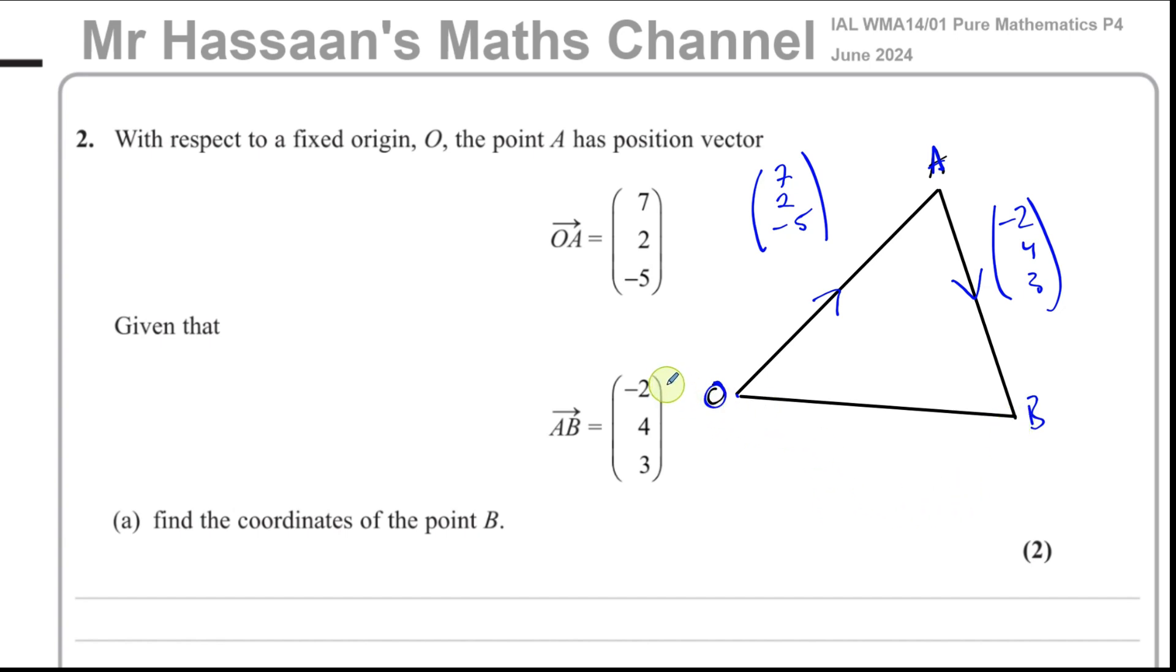The coordinates of the point B are basically the same numbers that you'll find in the vector OB. The vector OB tells you how to get from O to B, and the coordinates of B would be the same numbers. So if you find the position vector OB, you've effectively found the coordinates.